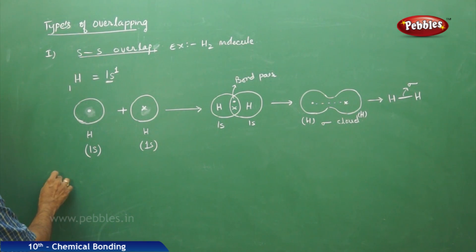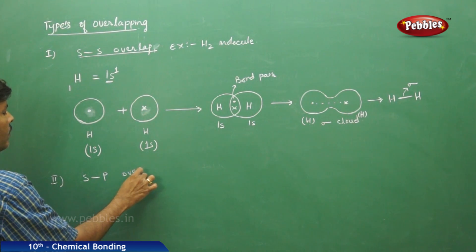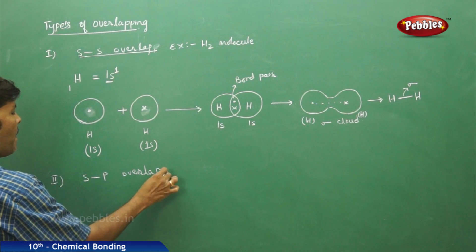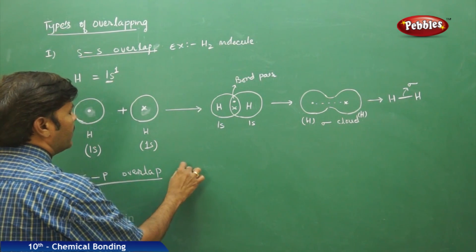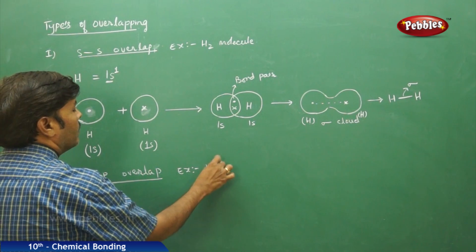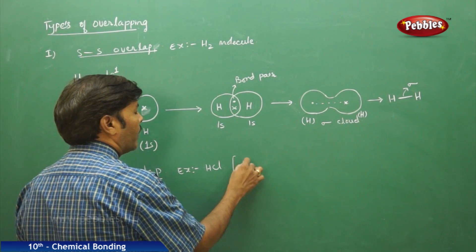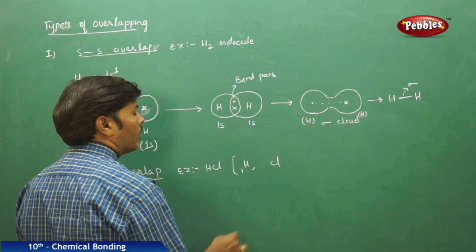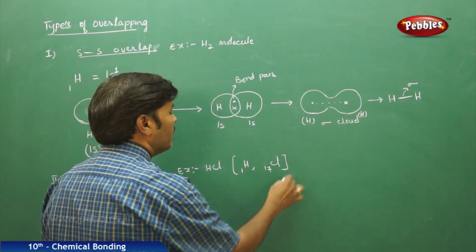With the first type of overlapping completed, we go for the second type: SP overlapping. The best example of SP overlap is the HCl molecule. In HCl you have two atoms — one hydrogen and one chlorine. Hydrogen has atomic number 1 and chlorine has atomic number 17.